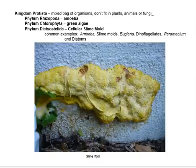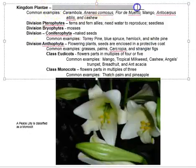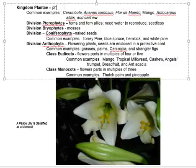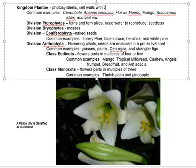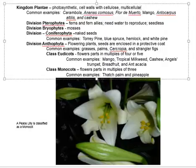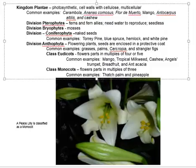Our next kingdom to talk about briefly is Kingdom Plantae. In general, plants are photosynthetic. They have cell walls with cellulose, and they're multicellular. They're going to have a nucleus and chloroplasts — those are the general plant features. Plants are being reworked a little bit. We're not going to go too heavily into Kingdom Plantae because it's not really a big player in the marine ecosystem.